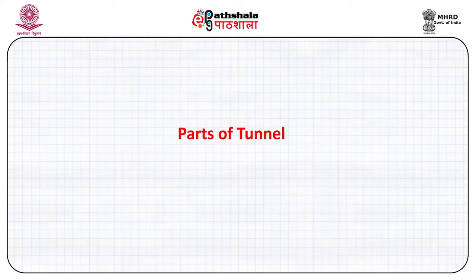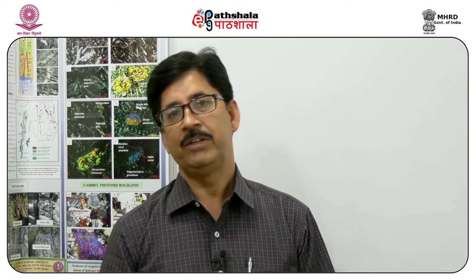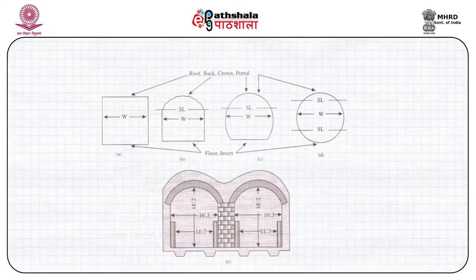There are three very important parts of tunnels. We call the upper part the portal, which is the ceiling of the tunnel. Then we have the floor of the tunnel, which is also called the invert. And then we have the adjoining walls. Most tunnels are arch-shaped or half-shoe-shaped.